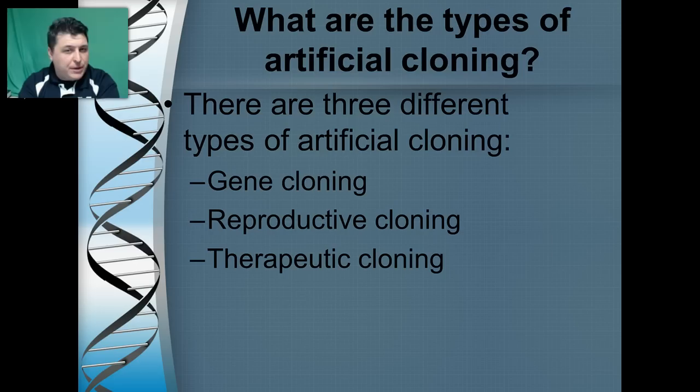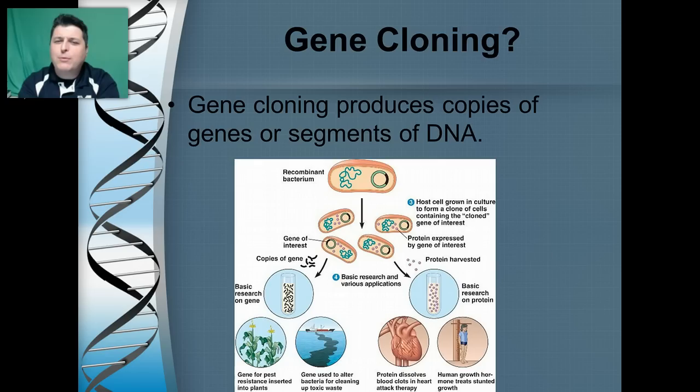Now there are three types of artificial cloning: gene cloning, reproductive cloning, and therapeutic cloning. Gene cloning is where we try to produce copies of genes, or just segments of DNA.